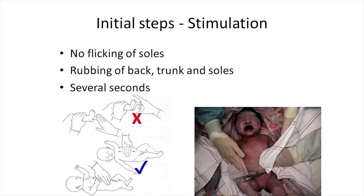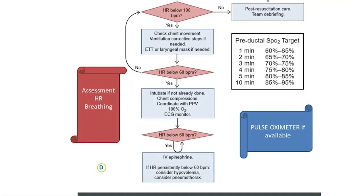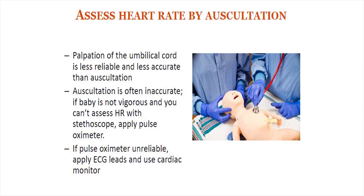After the initial steps, if the baby is not breathing or the heart rate is less than 100, proceed to positive pressure ventilation, given either by a self-inflating bag or a T-piece resuscitator. Assess heart rate by auscultation. Palpation of the umbilical cord is less reliable and less accurate. If the baby is not vigorous and heart rate cannot be assessed with a stethoscope, apply a pulse oximeter. If pulse oximetry is unreliable, apply ECG leads and use a cardiac monitor.